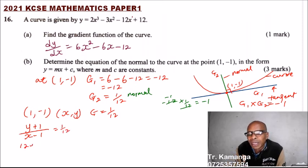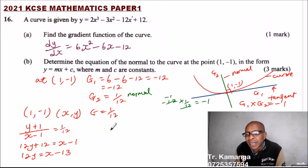We cross multiply, so we get 12 of y plus 12 is equals to x minus 1. Take 12 to the other side. We have 12 of y is equals to x, that will be minus 13.